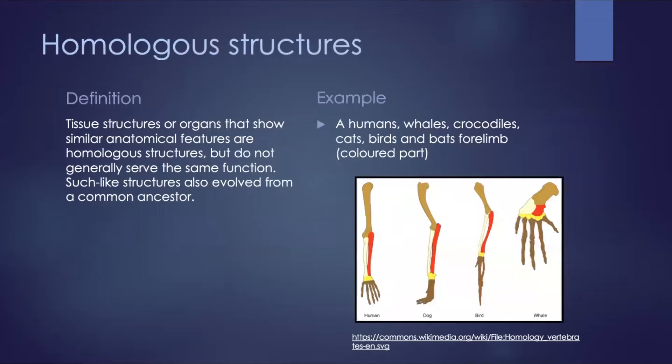Homologous structures. Tissue structures or organs that show similar anatomical features are homologous structures, but do not generally serve the same function. Such structures also evolved from a common ancestor.